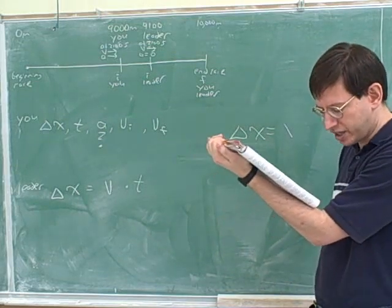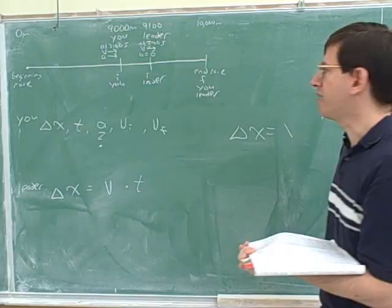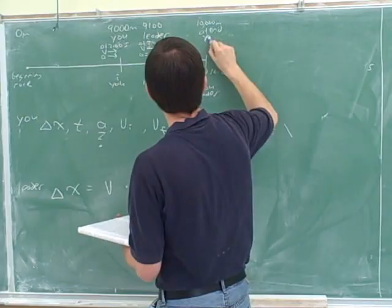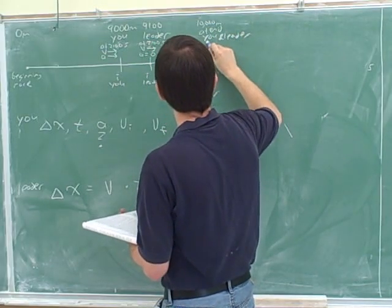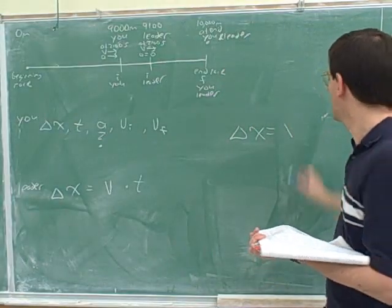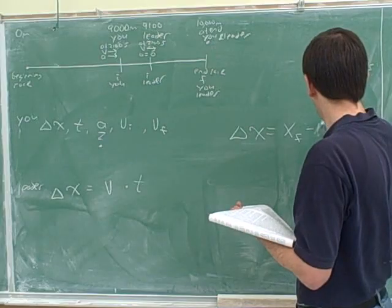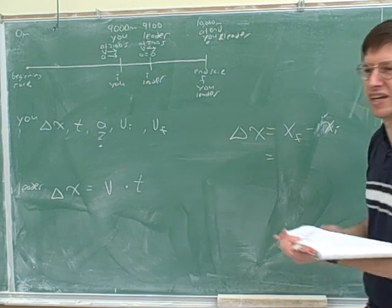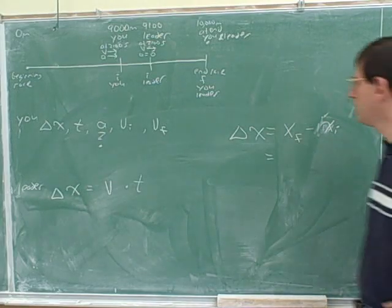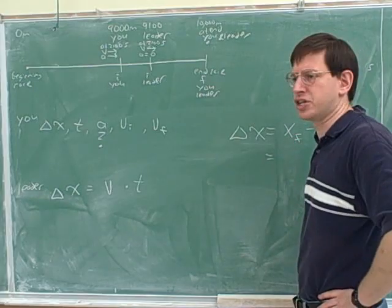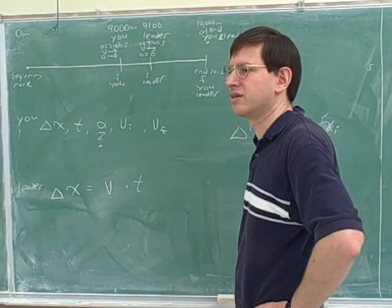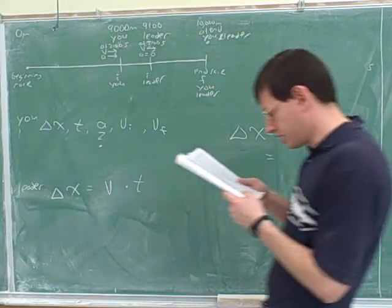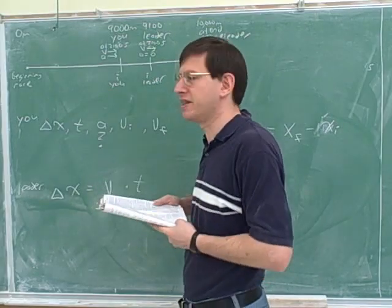You want to, well, what the question is telling us is you want to catch up by the finish line, right? So that means that right at this time, you're behind the leader. But at the finish line, the problem wants you and the leader to be in the same place. So that should be x-final minus x-initial, right? That's how we find displacement. So what's x-final going to be? 9,100. Something we're not understanding, something that's a problem. So let's see. Where will your final position be? Right, well, let's stop and think about that. So the question is asking us for what acceleration do we need so that we catch up by the finish line.